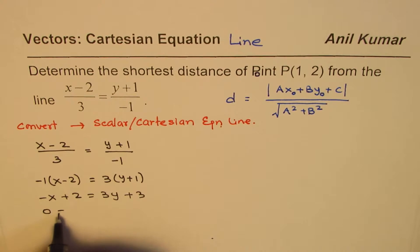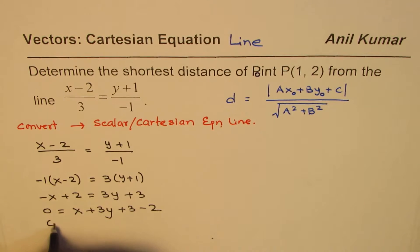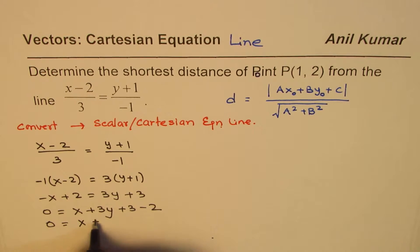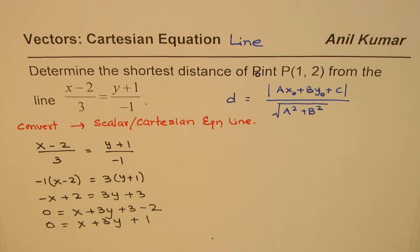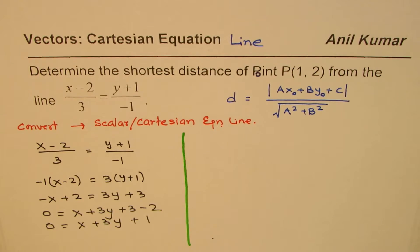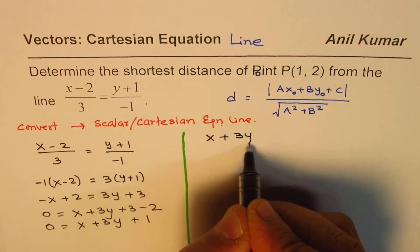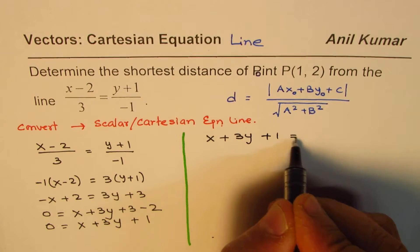So we have 0 = 2. Taking x to the right side, x, we have plus 3y there, plus 3 minus 2. So we get our equation as 0 = x + 3y + 1. From here, we do get the equation in Cartesian form. So we have the equation of the line as x + 3y + 1 = 0.